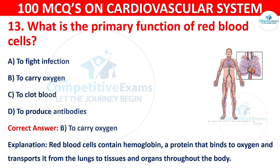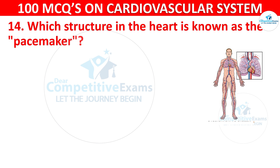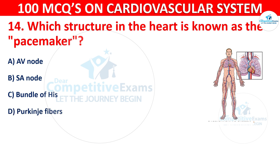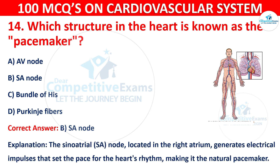Q14. Which structure in the heart is known as the pacemaker? Options are: AV node, SA node, bundle of His, or Purkinje fibres. The correct answer is B — SA node. The sinoatrial (SA) node, located in the right atrium, generates electrical impulses that set the pace for the heart rhythm, making it the natural pacemaker.